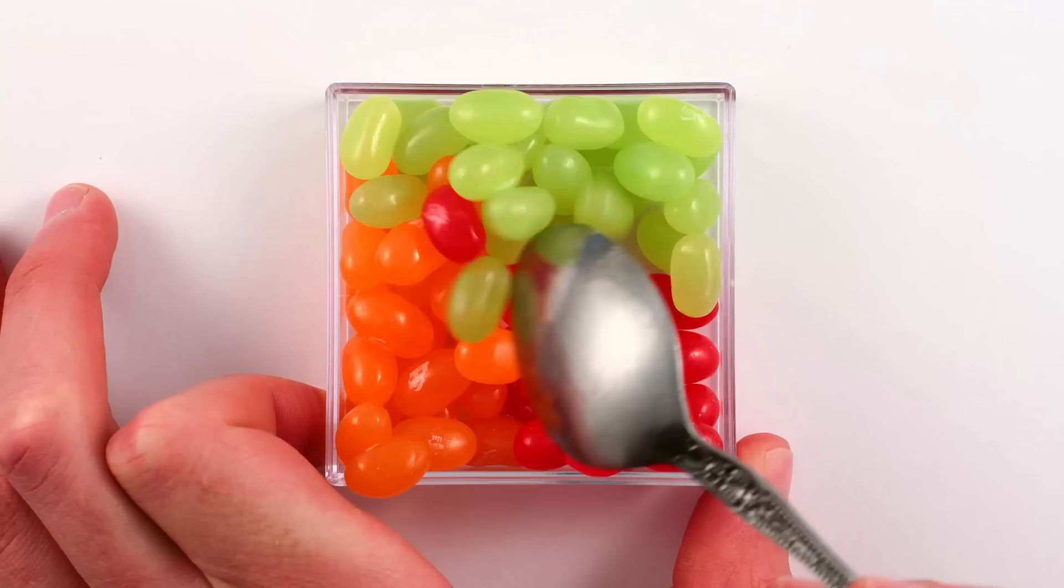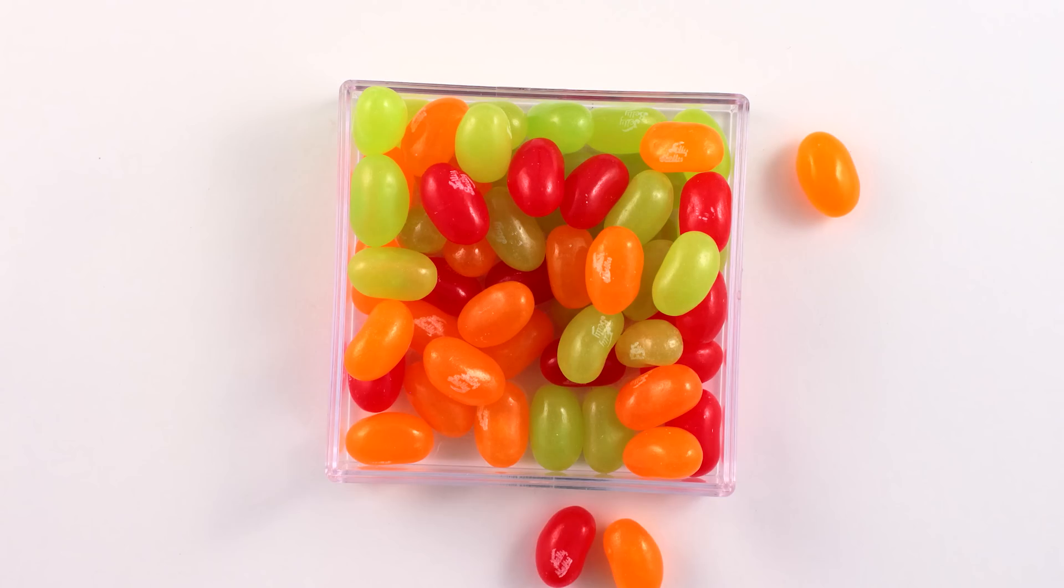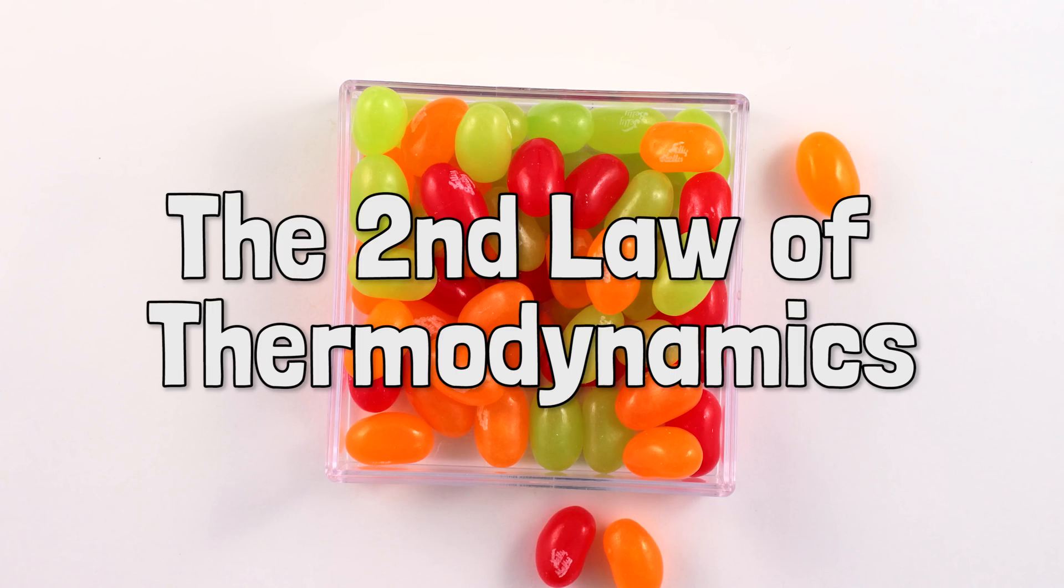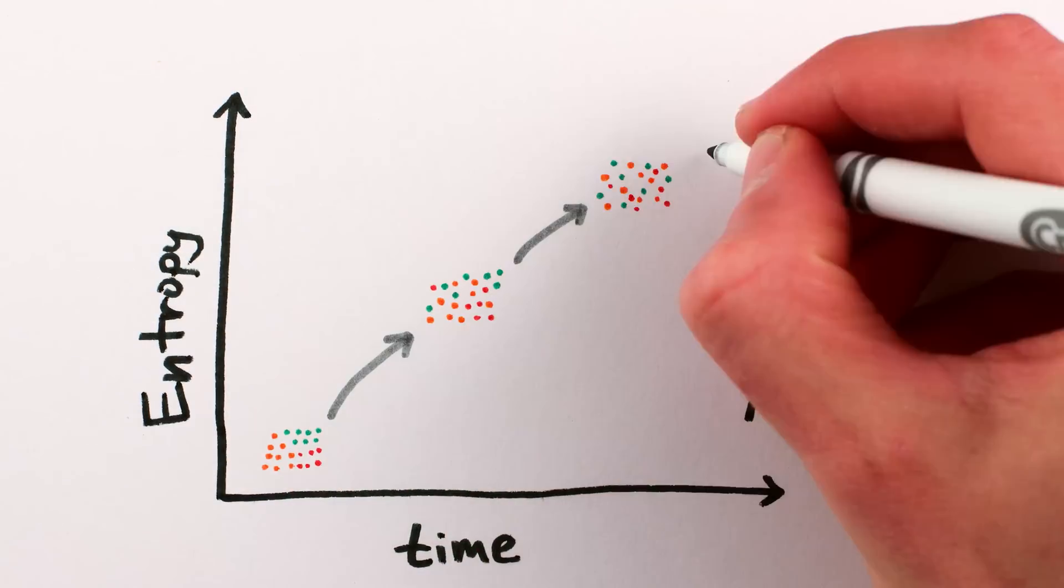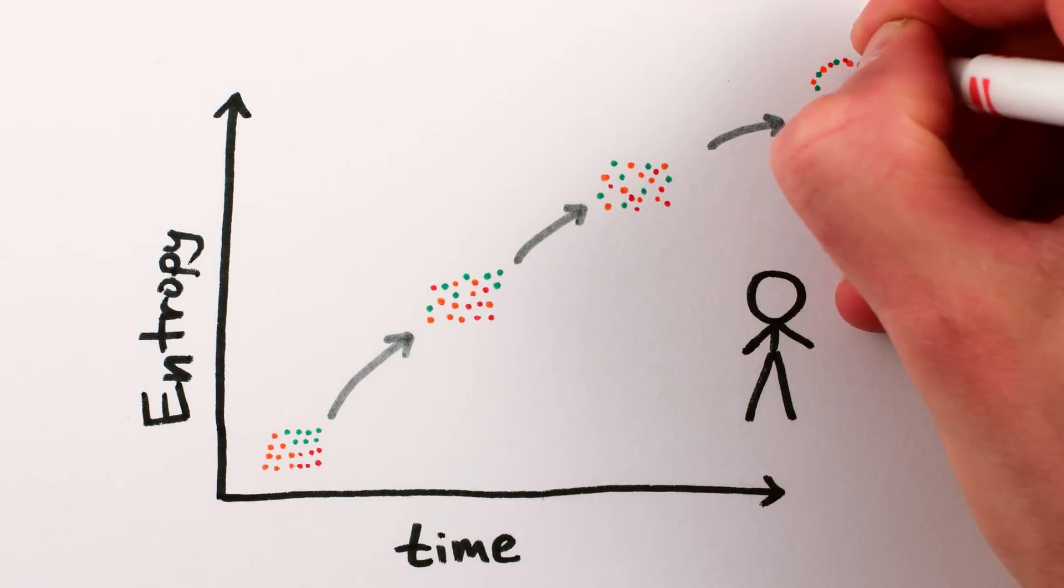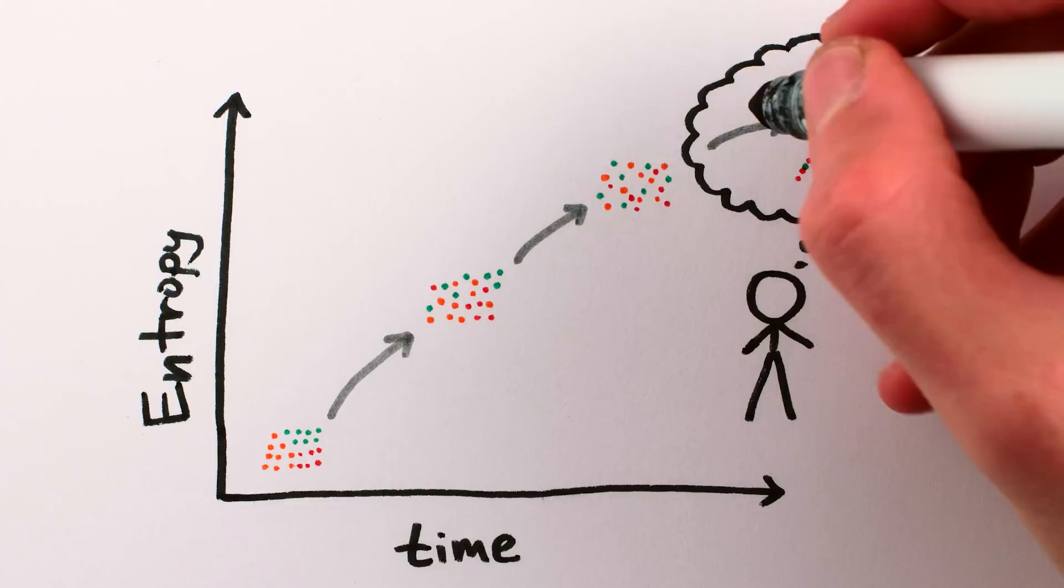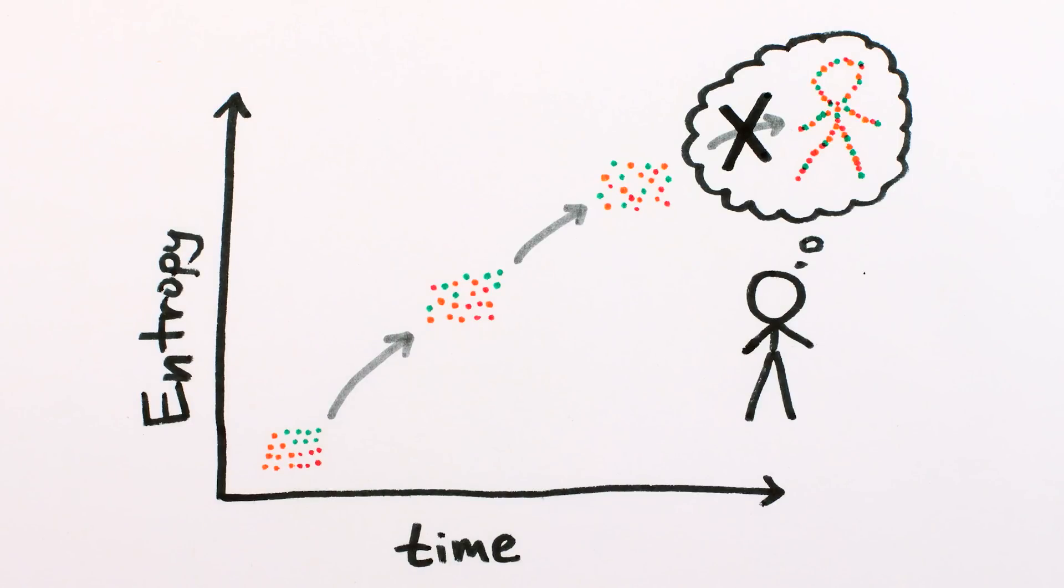The universe as a whole evolves towards increasing entropy or disorder, a tendency physicists call the second law of thermodynamics. This movement towards disorganization might lead you to think that organized structures, like say living beings, would never spontaneously come into existence.